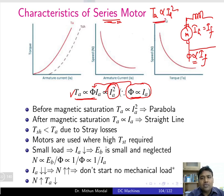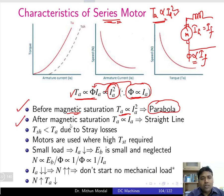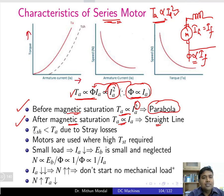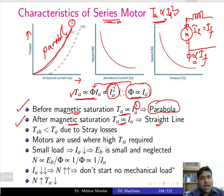Since torque is proportional to the square of armature current, it is quadratic in nature. Before magnetic saturation, the torque-armature current curve is parabolic in nature. Once magnetic saturation is reached, the square term vanishes and torque becomes proportional to armature current, giving a straight line. So the characteristic transitions from a parabola to a straight line after saturation.